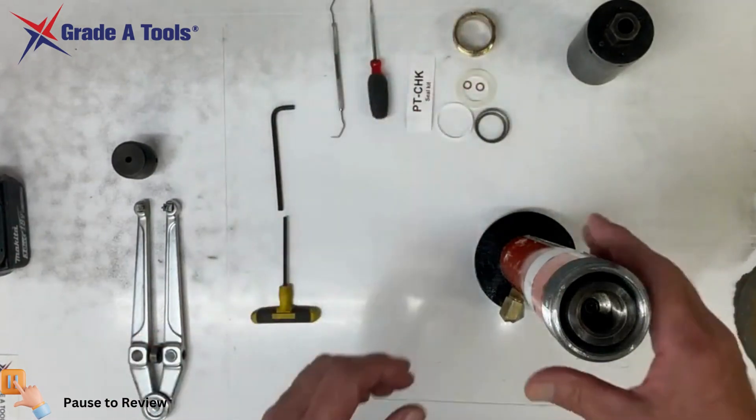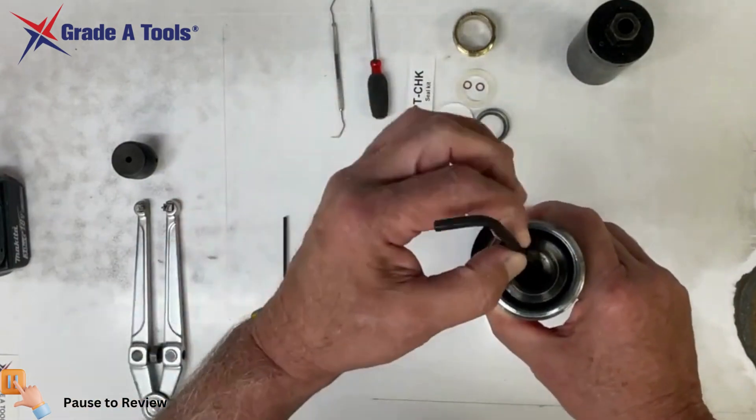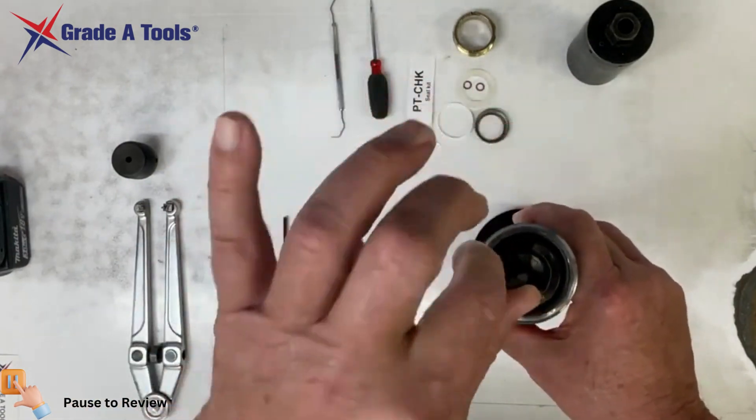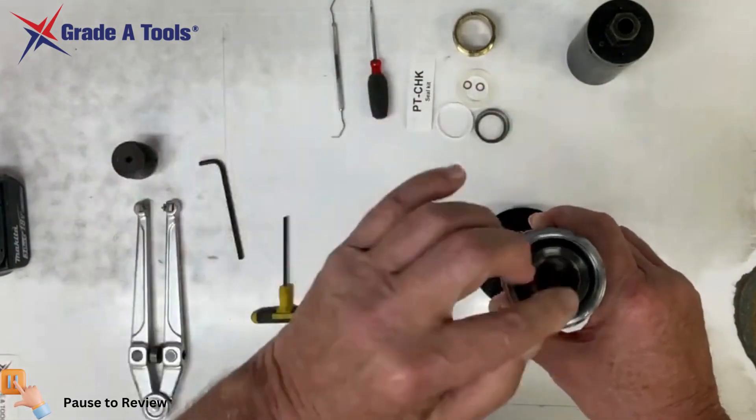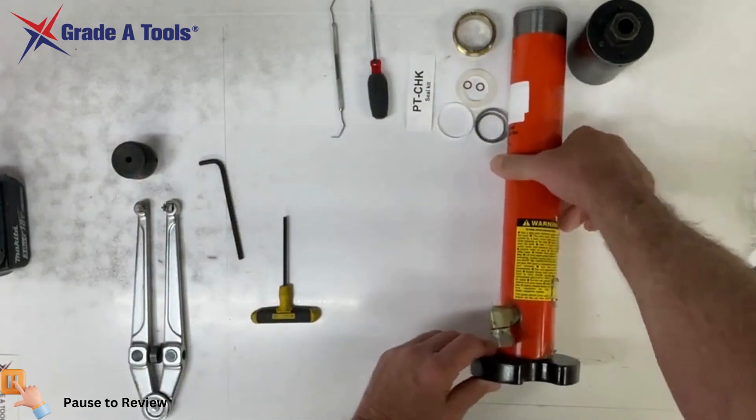The next thing that you'll notice is down inside here we have an Allen wrench. There is a screw in there. We will get to that in a little bit.